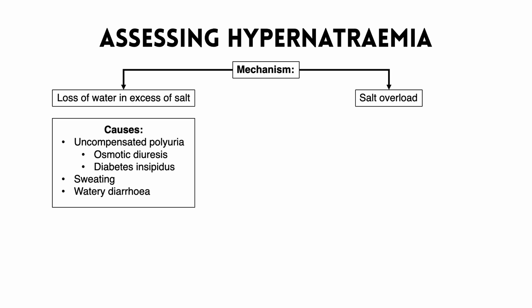The main causes of this are uncompensated polyuria, sweating, and watery diarrhoea. Sweating is simple to understand — sweat contains less salt than the blood, such that when we sweat, we overall lose fluid more than salt, causing an increased concentration of salt in the blood. With watery diarrhoea, again, you lose a great volume of water and not as much sodium, so you lose water more than sodium and increase the concentration of sodium in the blood.